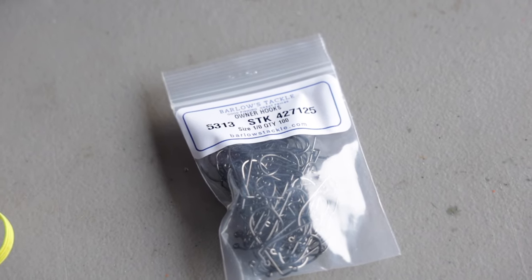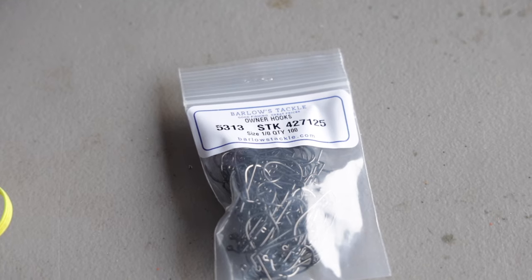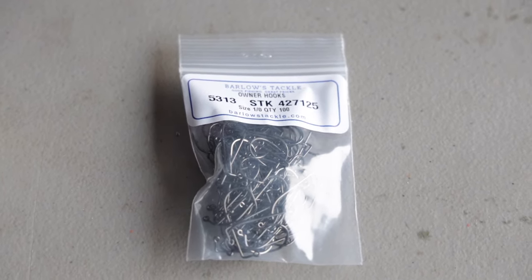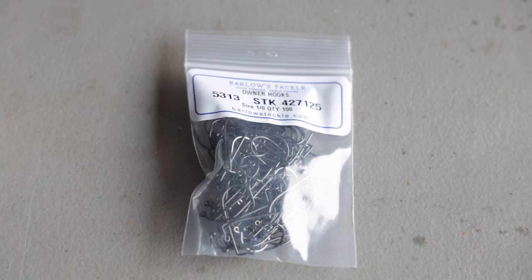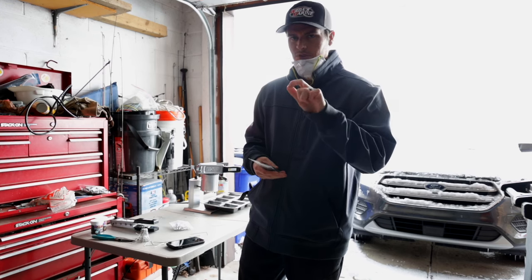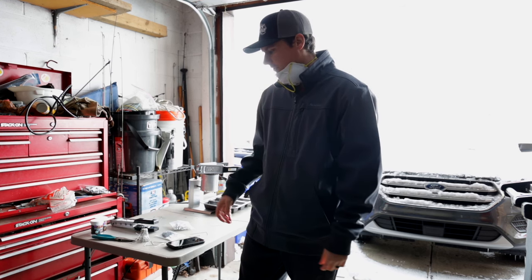I use these owner hooks. They're the 5313s and I buy them in a one-aught size. I use them for my ball head jigs. I use them for my ned rigs and I use them for this technique here. So it's a very versatile hook. It's a little bit of a heavier wire so it holds up to this big smallmouth and then it has a little sickle hook on the end and you get a lot of good hookups with that. So that's the hook we're going to be using.